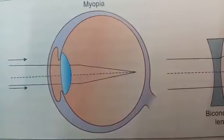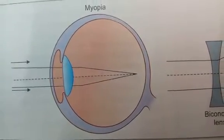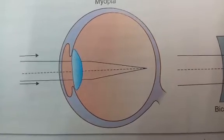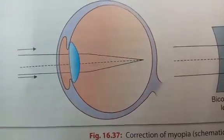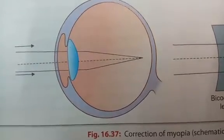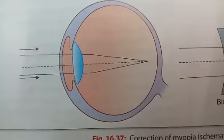The patient can see near objects without any difficulty, but distant vision cannot be seen clearly. This condition is explained with the help of a figure. In myopia, parallel rays enter through the lens and are focused in front of the retina, due to the increase in the anterior-posterior diameter of the eyeball.